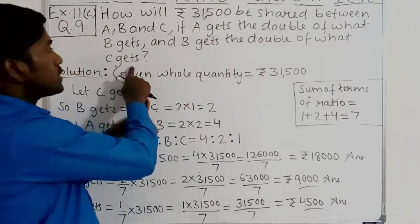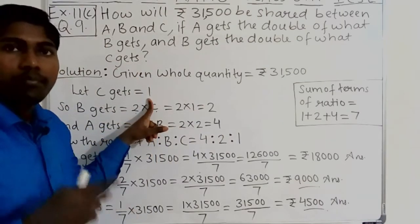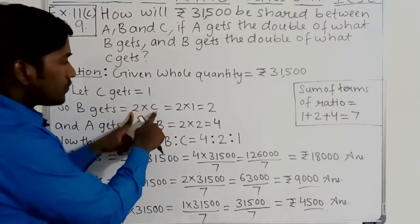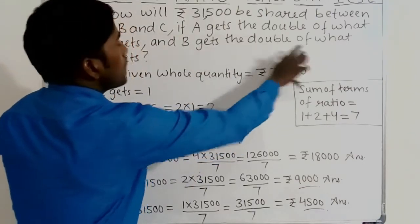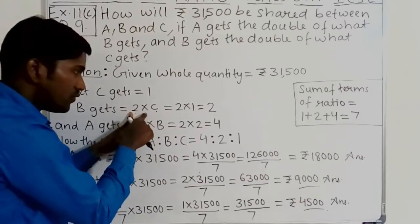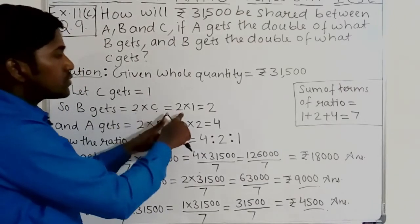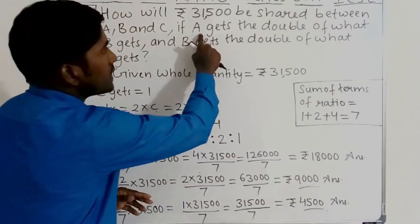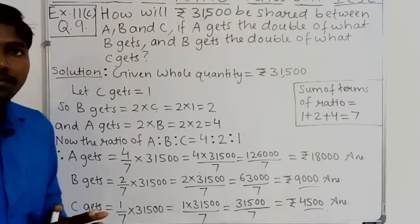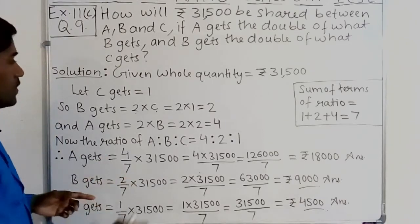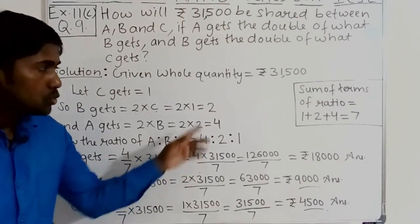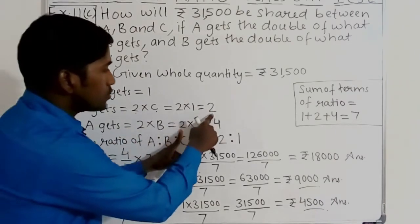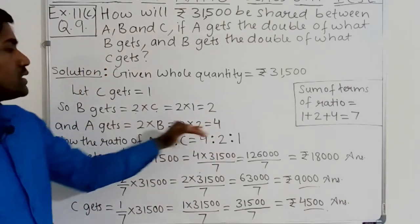B gets the double of what C gets. Since C equals 1, B is equal to double of what C gets, which is 2 into 1, equal to 2. So B gets equal to 2. Now we will find how much A gets. A gets the double of what B gets, so A is equal to 2 into 2, equal to 4.